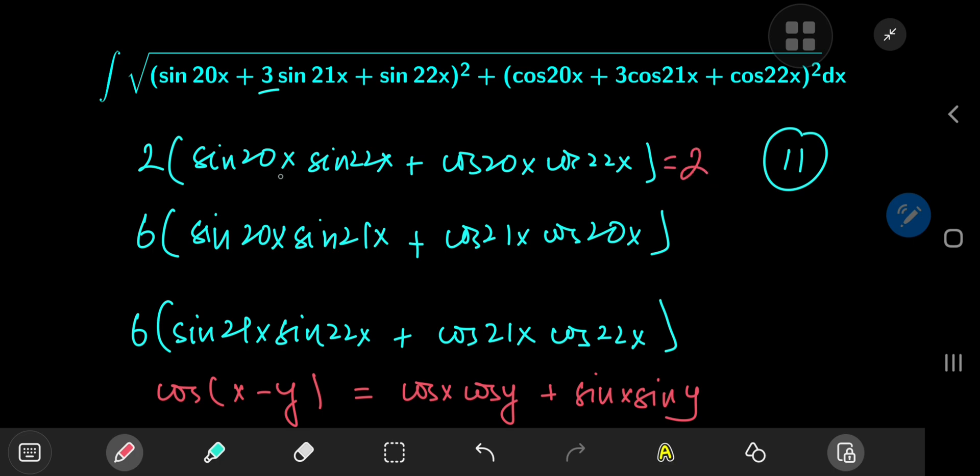So that means for the first expression here, you get 2 times the cosine of 20 minus 22, which is negative 2x. But again, the cosine is an even function, so you don't have to care about the negative sign.